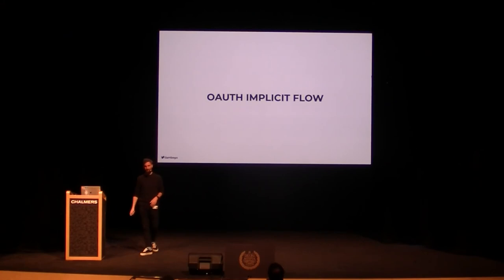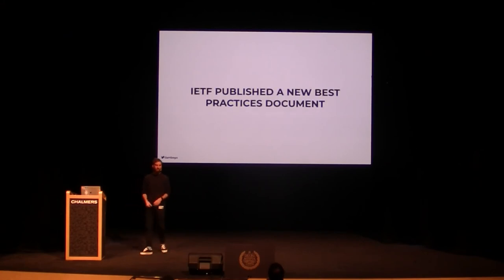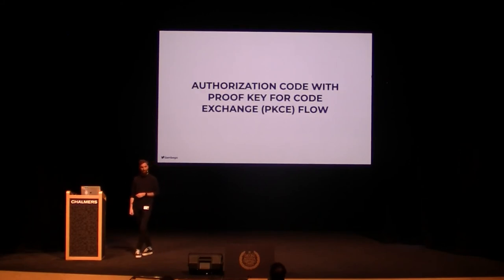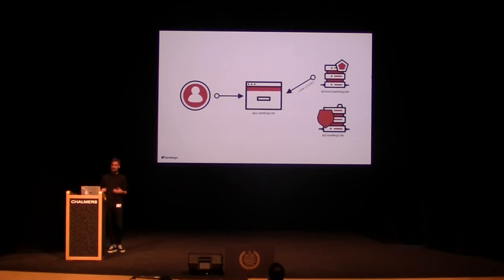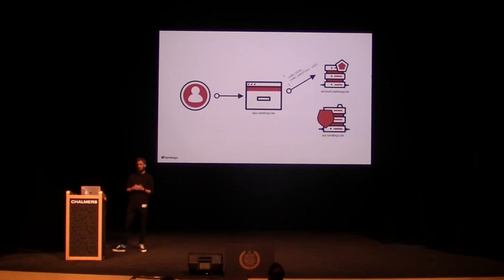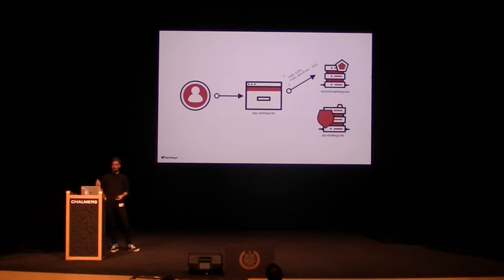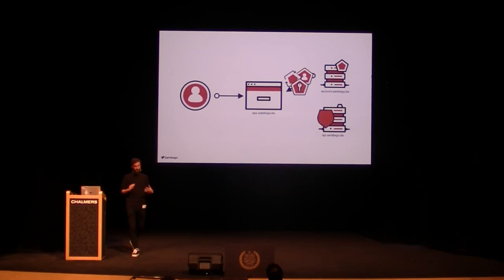This is the auth implicit flow. There's been a lot of fuss about it — the IETF publishing a best practices document stating you should not use it. But the authorization code with Proof Key for Code Exchange flow, which is a bit more complicated: you send your user credentials with a code challenge to your authorization server, it sends back a code, you sign this code and send it together with a verifier back to your authorization server — this makes sure the code is only used by a trusted source. Once you've done these two extra steps, you get your tokens back. It's a bit more complicated, but makes it more secure.